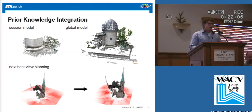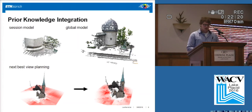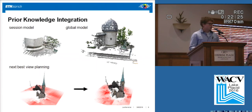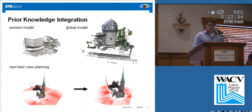Since we have a global model in the back, we can also show results to the user which he has not yet scanned. The results might be from a previous scan session or from a huge database in the back. In addition, we can come up with some intelligent view planning — we might tell the user to go around the corner because the backside of the building is not yet covered in the global model. We can do that by showing a heat map or another visual guidance, as shown here.